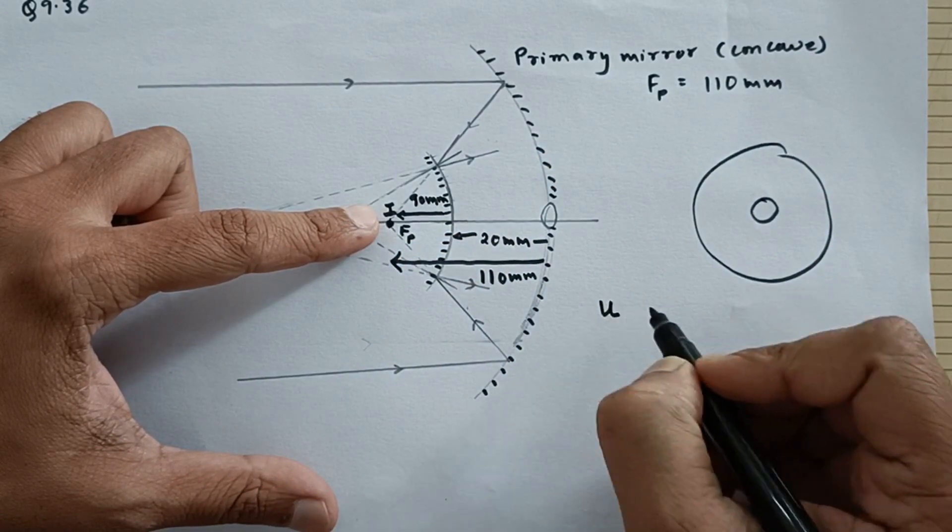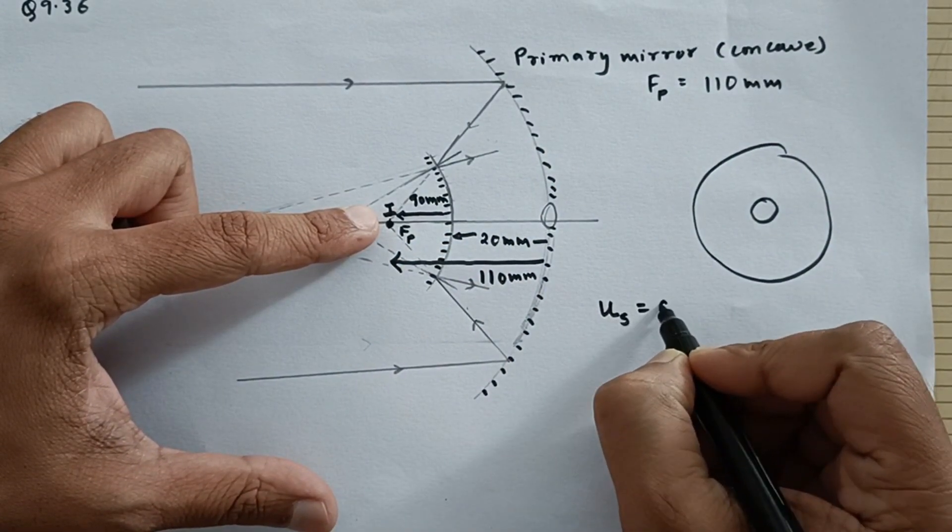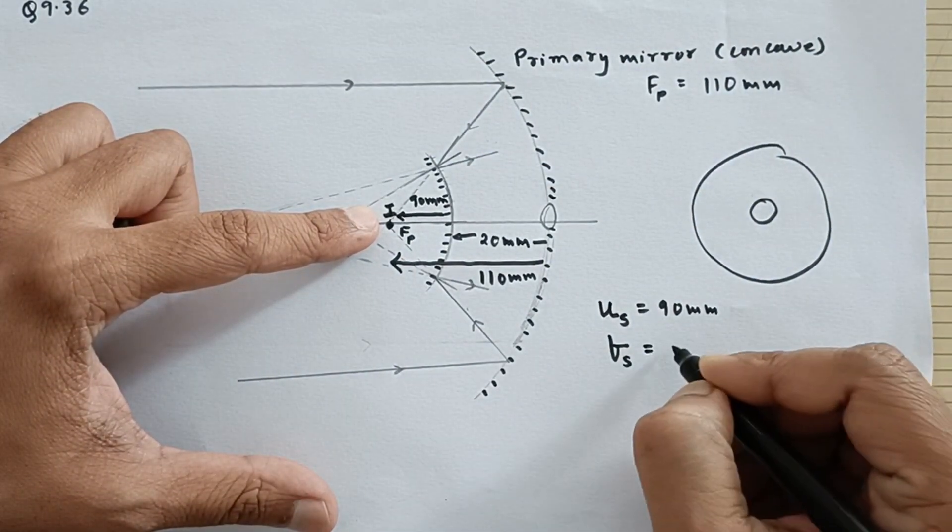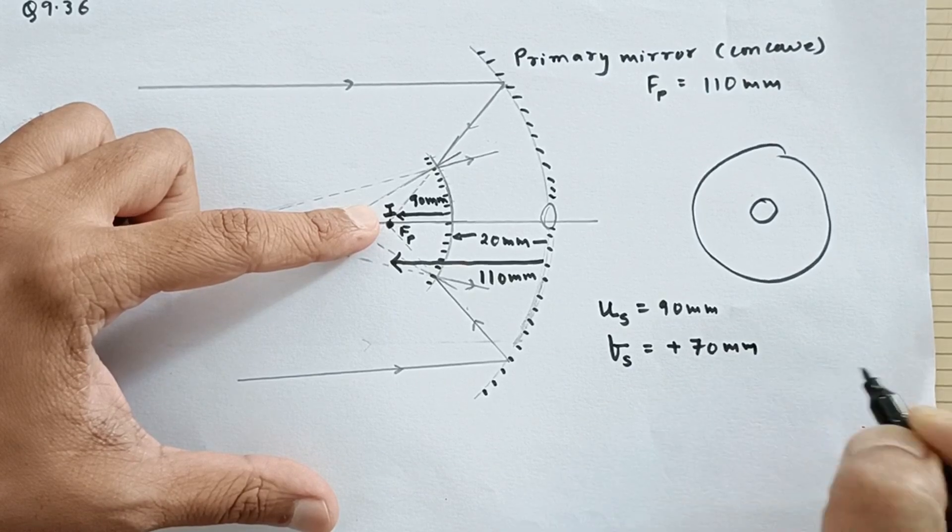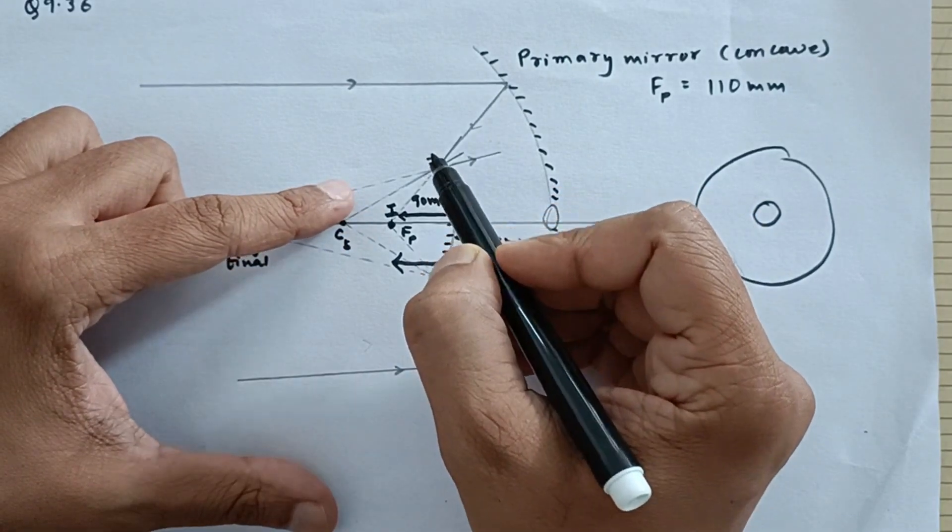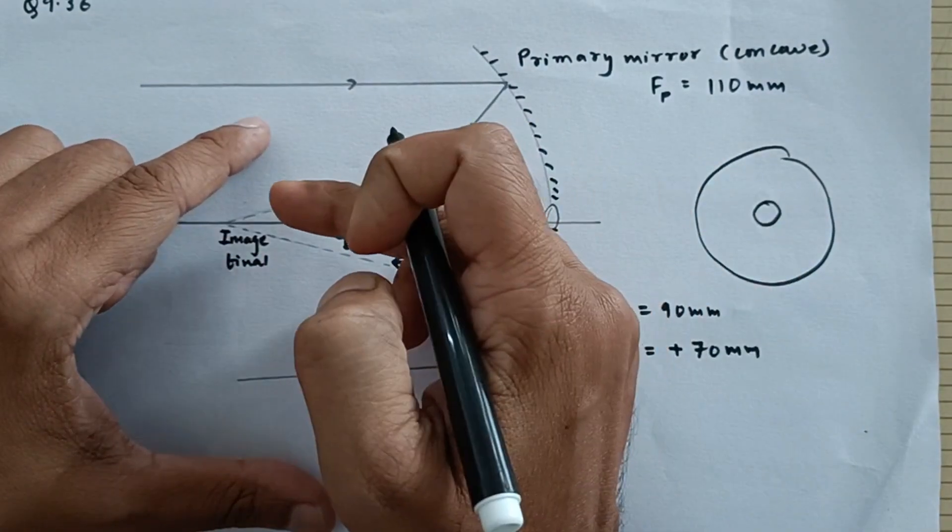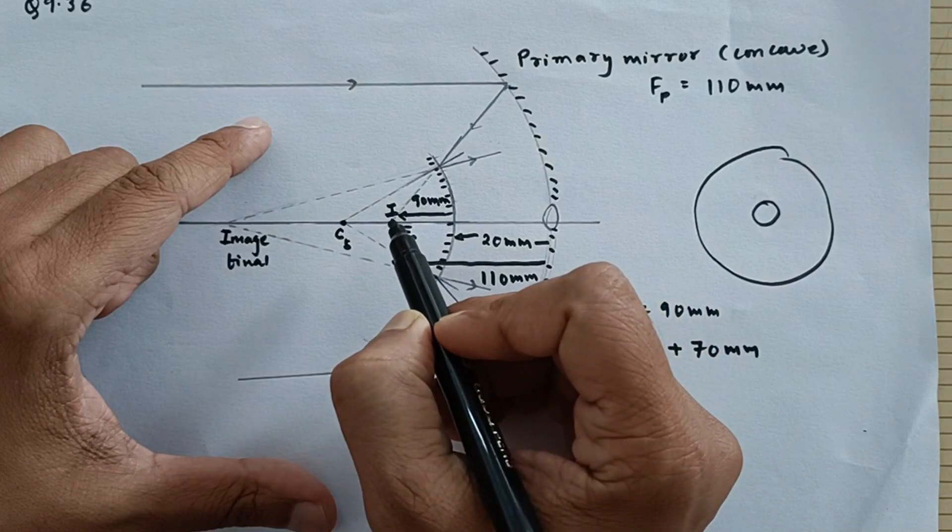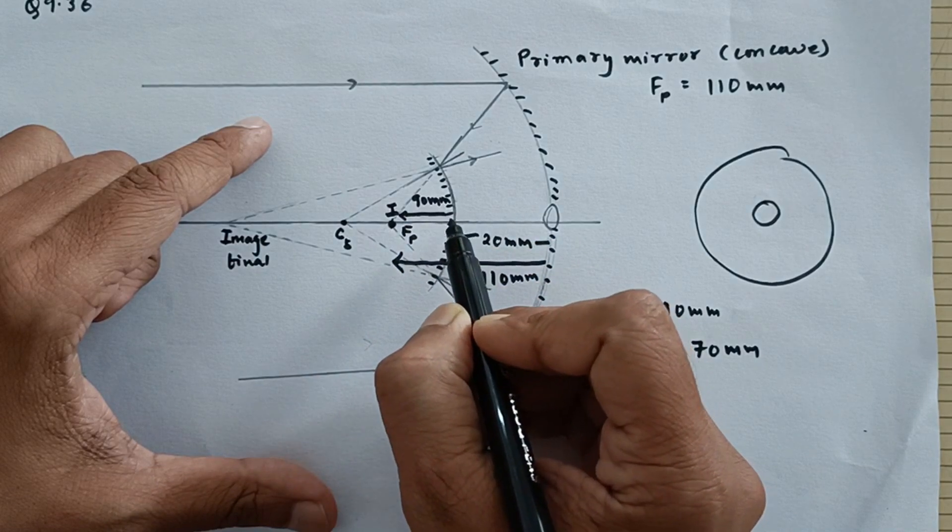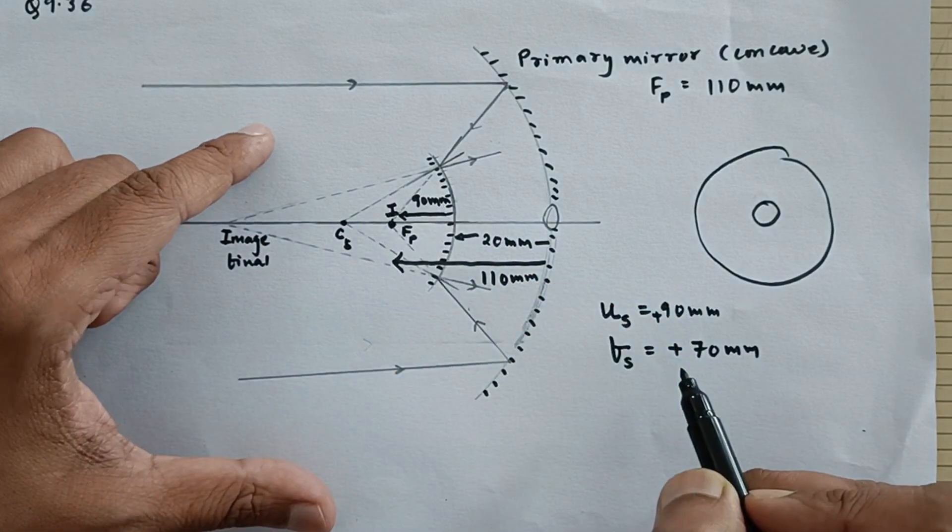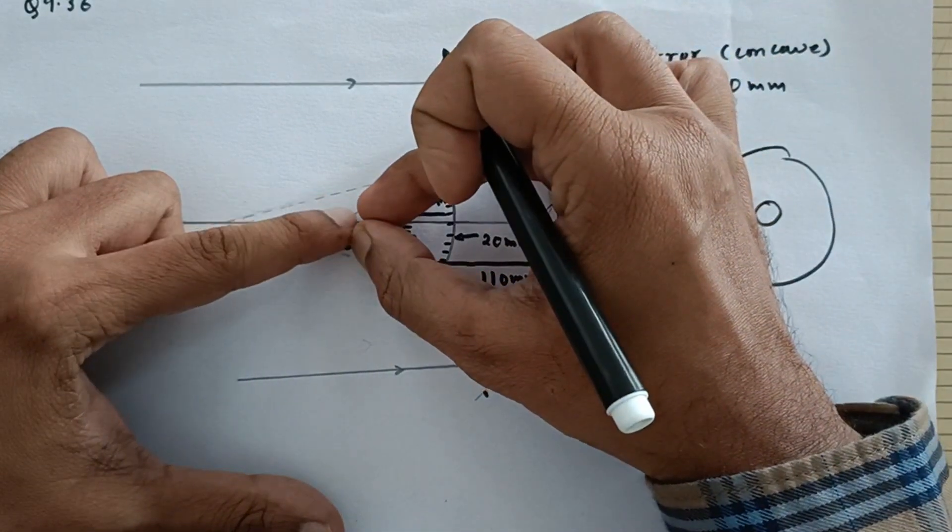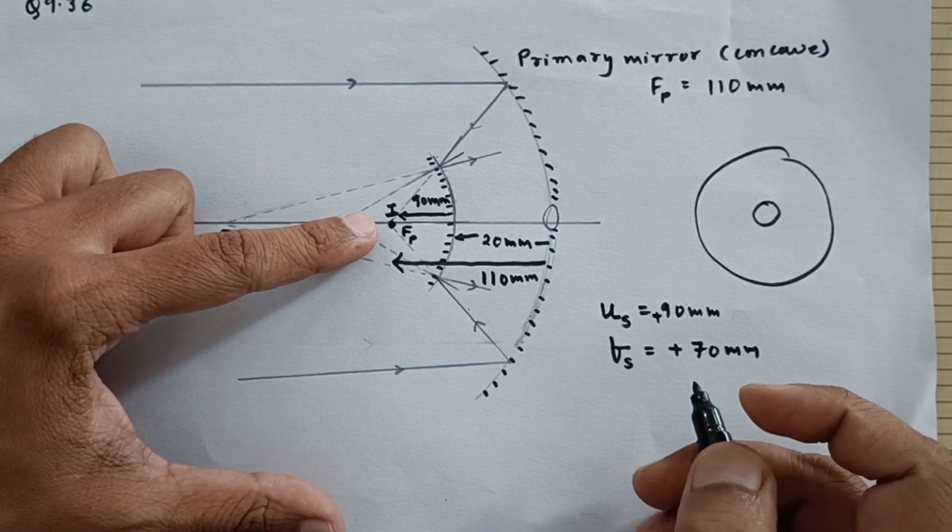So I should say that the object distance for the secondary mirror is 90 mm. The focal length of the secondary mirror is plus 70 mm. Now I should say that you apply the sign conventions very carefully. Now since this is the incident ray for this mirror, so all distances along the incident ray would be positive. So even the object distance would be positive because the incident ray is going in this direction and all distances are measured from pole. And even the focal length would be positive because parallel rays after diversion they will meet somewhere over here. So the focus is also behind the mirror, so plus.